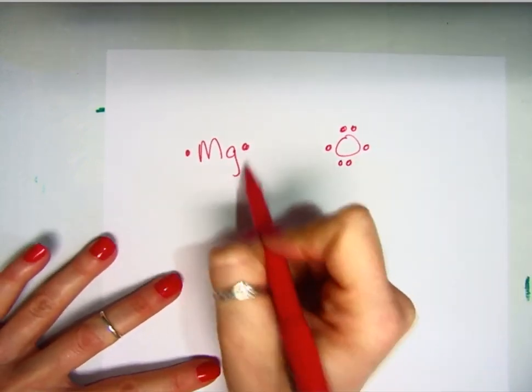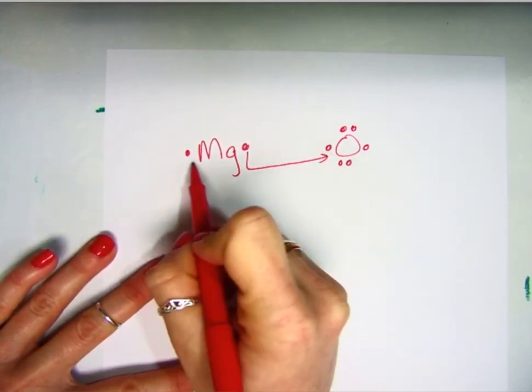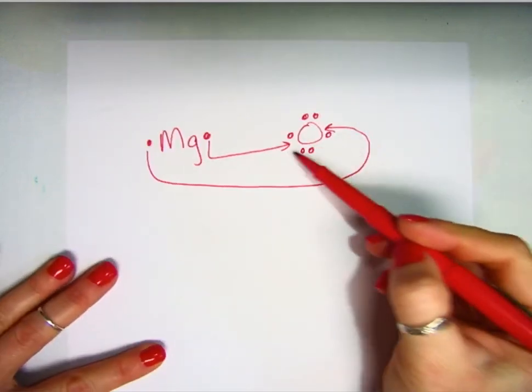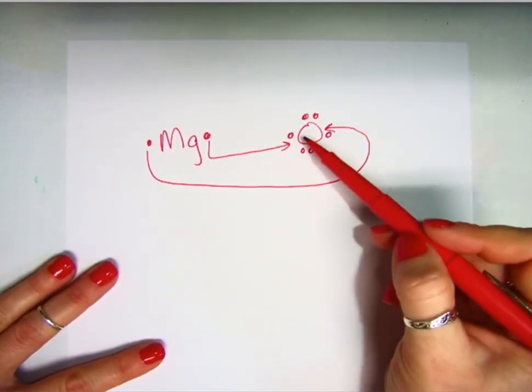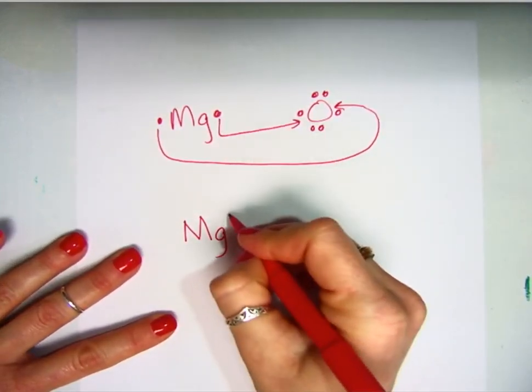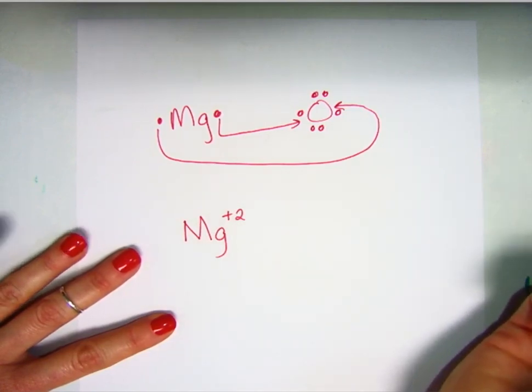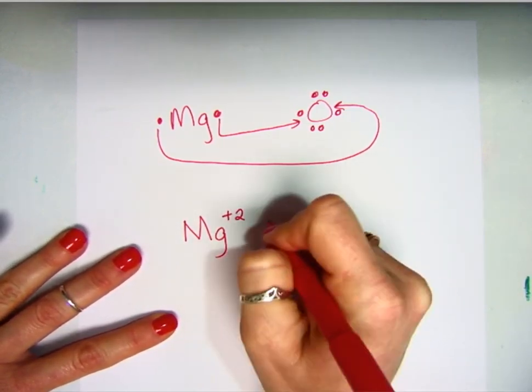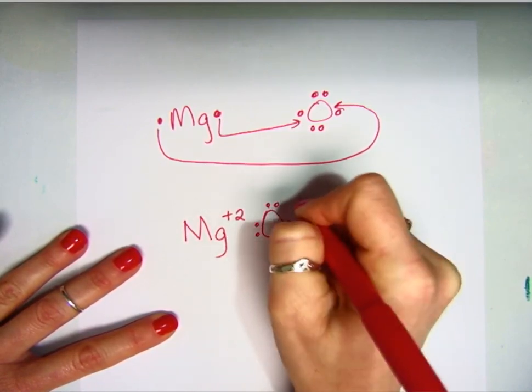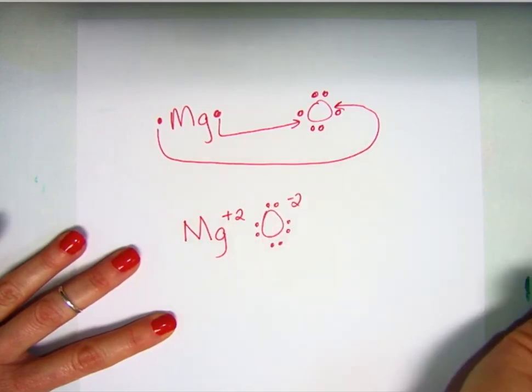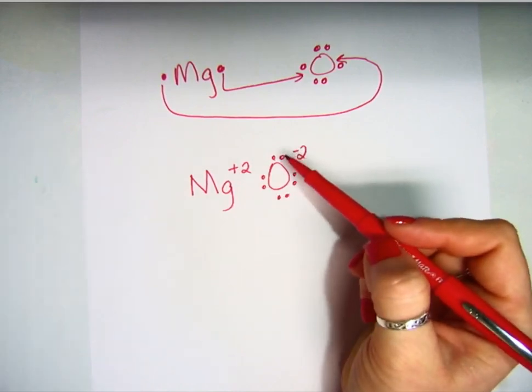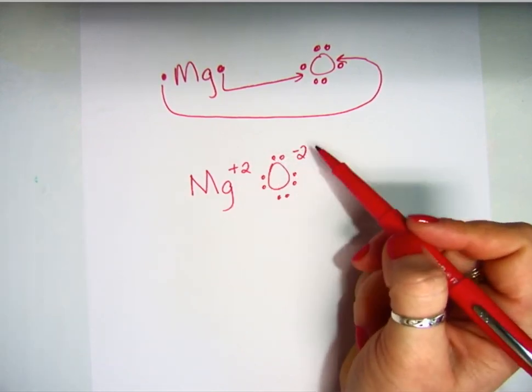Magnesium is going to lose its valence electrons, and when it does, oxygen is going to take those in to fill up those two single spots, so they become pairs. Magnesium, having lost two electrons, becomes positively charged, positive two. And oxygen gains two electrons to have a negative two charge. So Mg2+ and O2-.